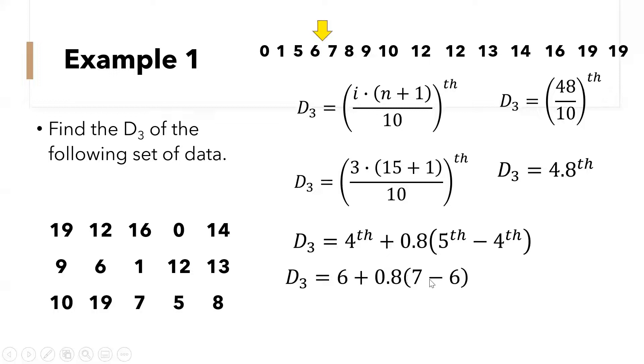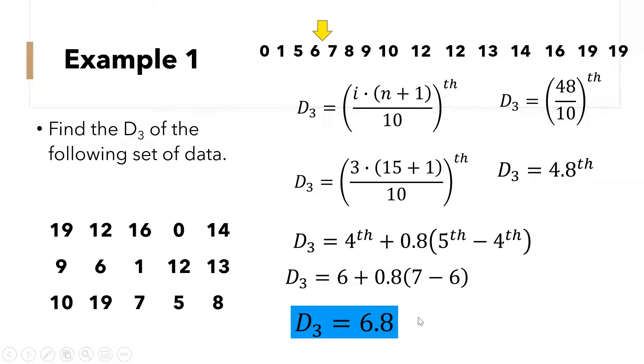So that is 6 plus 0.8 times (7 minus 6). That is 0.8 times 1, plus 6, which equals 6.8. Therefore, decile 3 is 6.8.